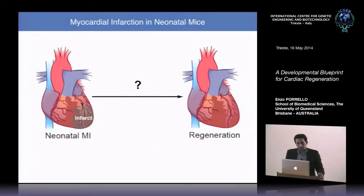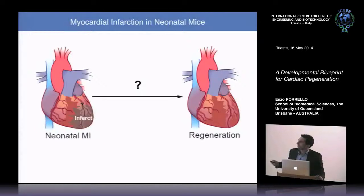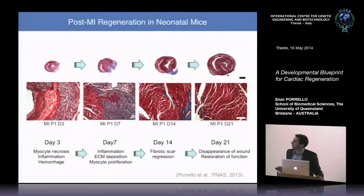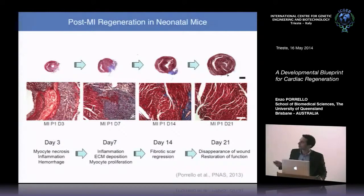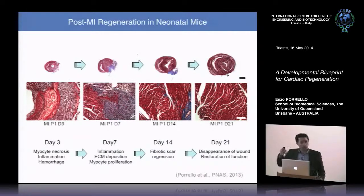This demonstrated neonatal regenerative capacity, but removing a portion of the ventricle isn't disease-relevant. More recently, we established a model of myocardial infarction in one-day-old mice via permanent ligation of the left anterior descending coronary artery. We found the neonatal heart can also regenerate following MI, involving early myocyte necrosis, inflammation and hemorrhaging at day 3, extensive ECM deposition at day 7, and regression of fibrotic tissue by day 14.